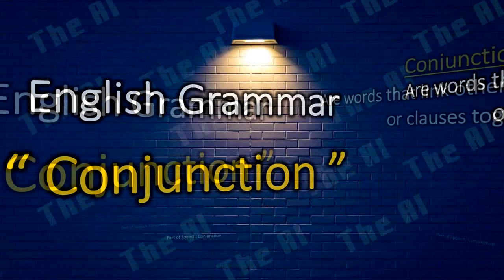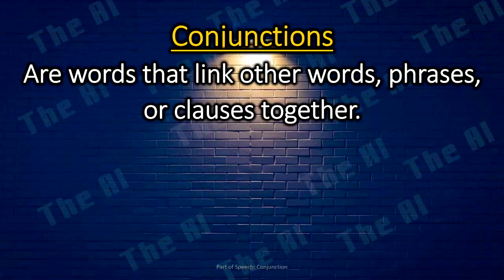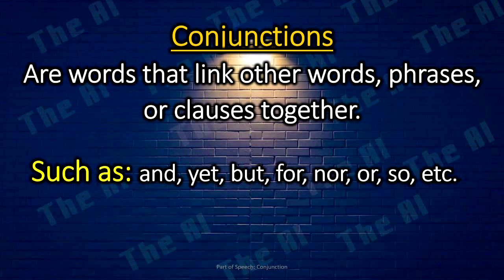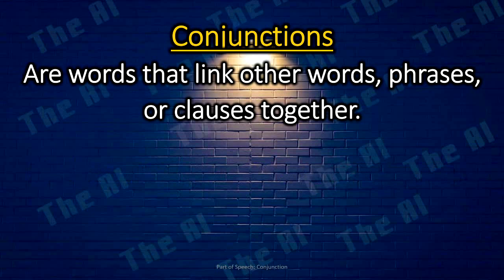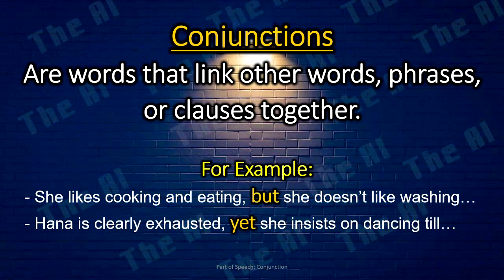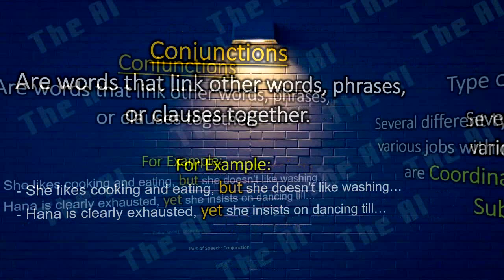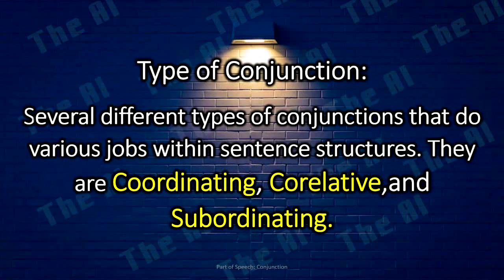Conjunctions. Conjunctions are words that link other words, phrases, or clauses together, such as and, but, for, nor, or, so, etc. For example: She likes cooking and eating, but she doesn't like washing dishes afterward. Hannah is clearly exhausted, yet she insists on dancing till dawn. There are several different types of conjunctions: coordinating, correlative, and subordinating conjunctions.